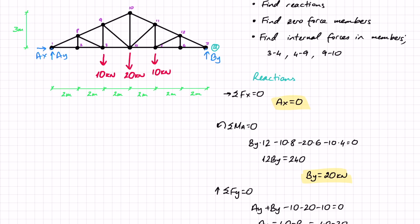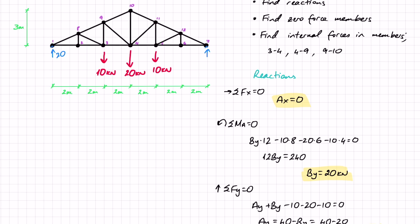Looking at the structure, everything is symmetrical so it makes sense that AY equals BY. I'll now replace the supports with their values: AX is removed, AY is replaced with 20, and BY is replaced with 20.